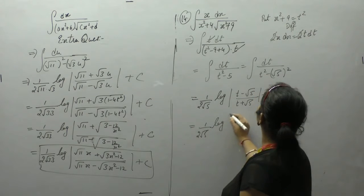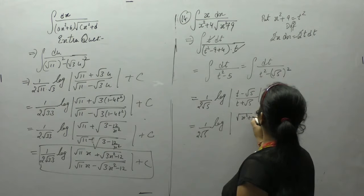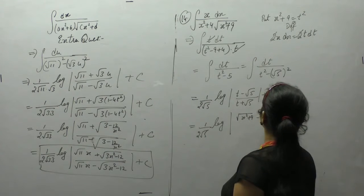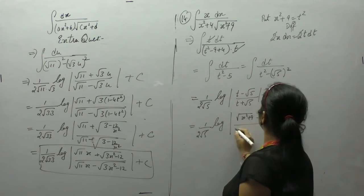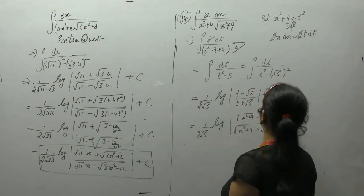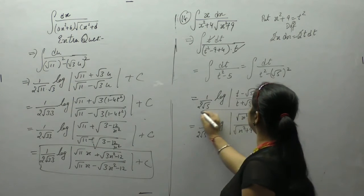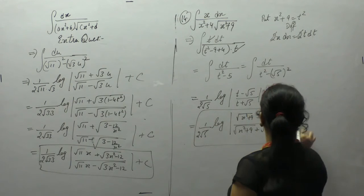Substituting back the value of t, the answer is: square root of x² + 9 minus square root of 5, upon square root of x² + 9 plus square root of 5.